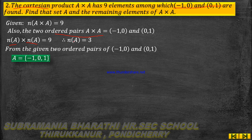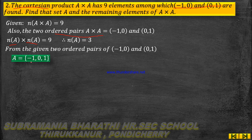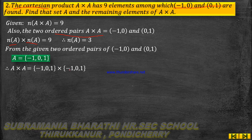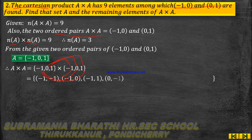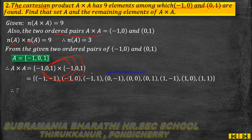From the given two ordered pairs (-1, 0) and (0, 1), we determine that A = {-1, 0, 1}. Now A×A = {-1, 0, 1} × {-1, 0, 1}, giving the pairs: (-1,-1), (-1,0), (-1,1), (0,-1), (0,0), (0,1), (1,-1), (1,0), (1,1).